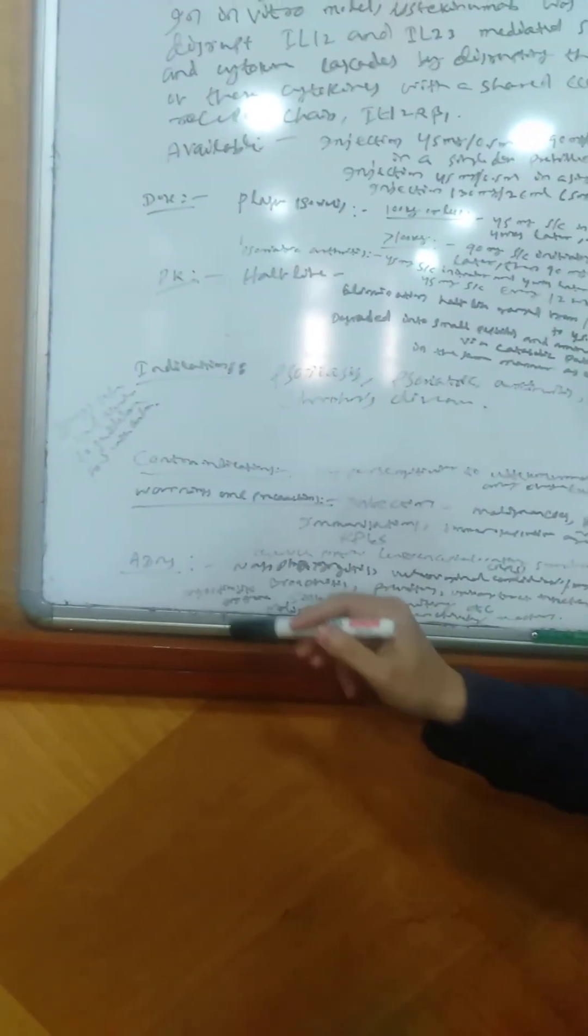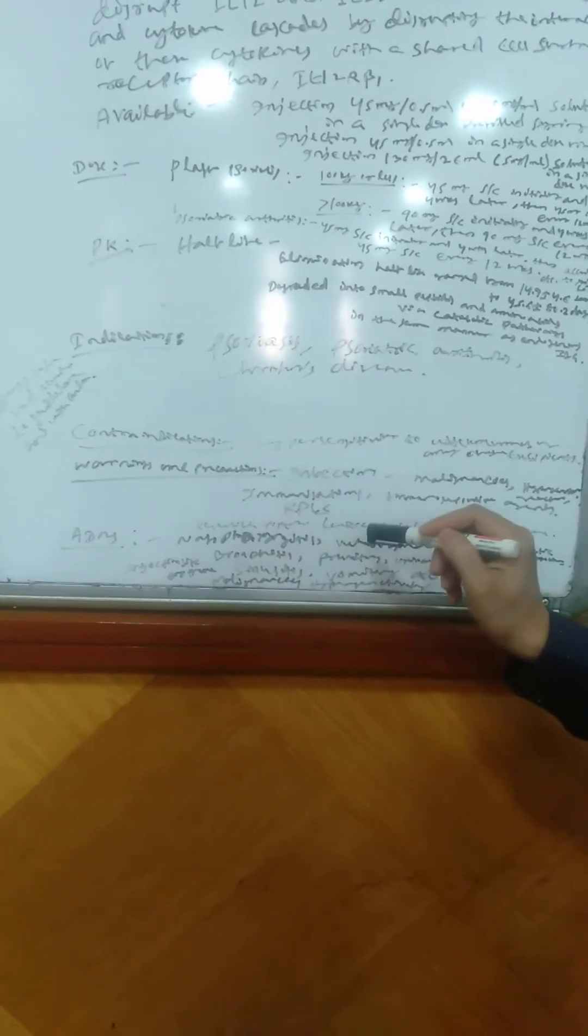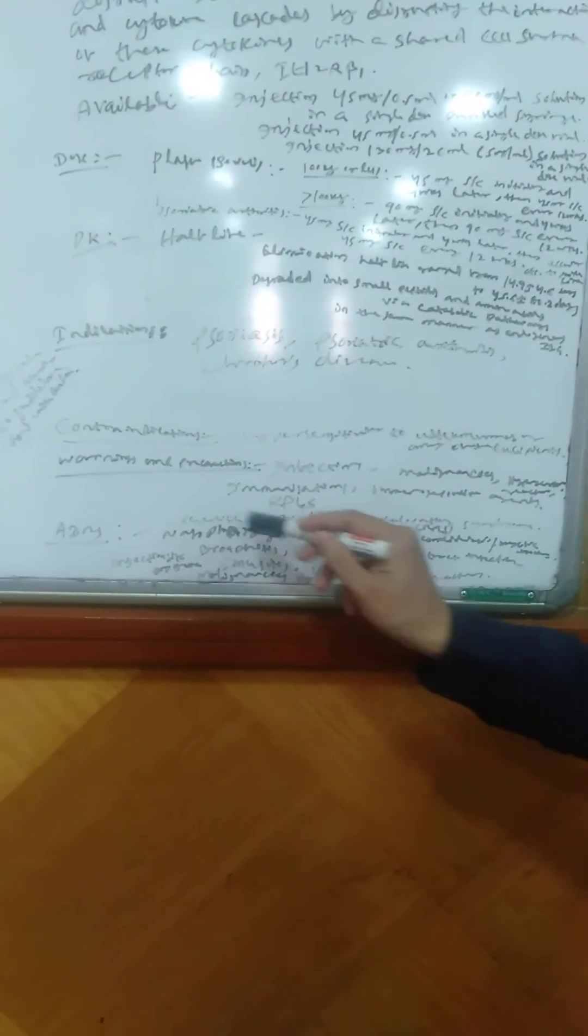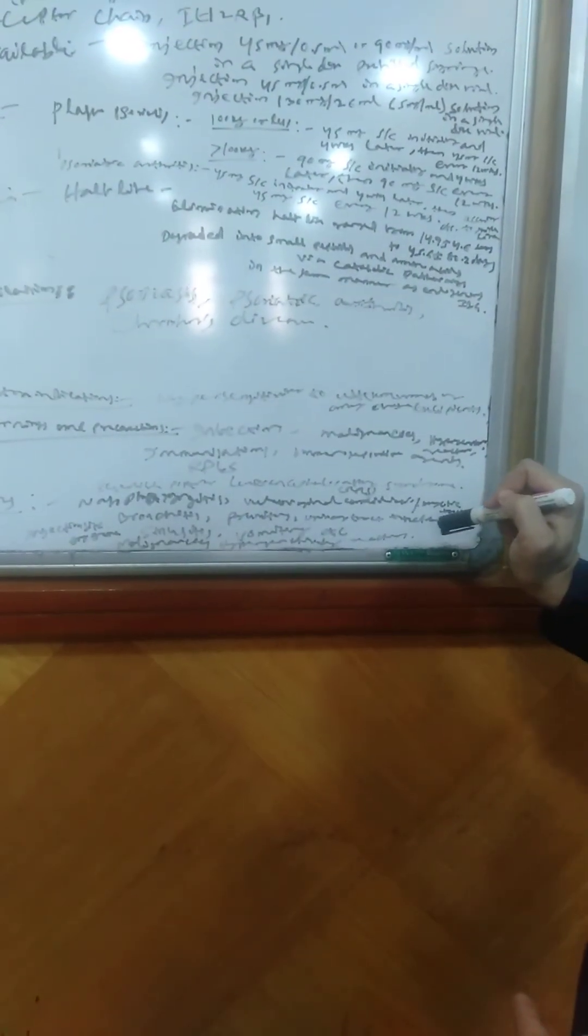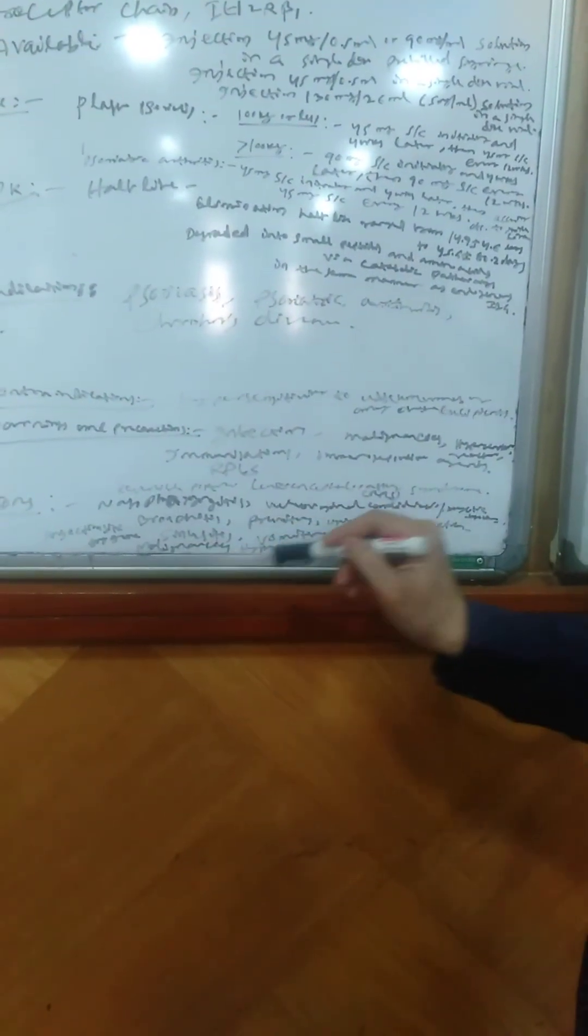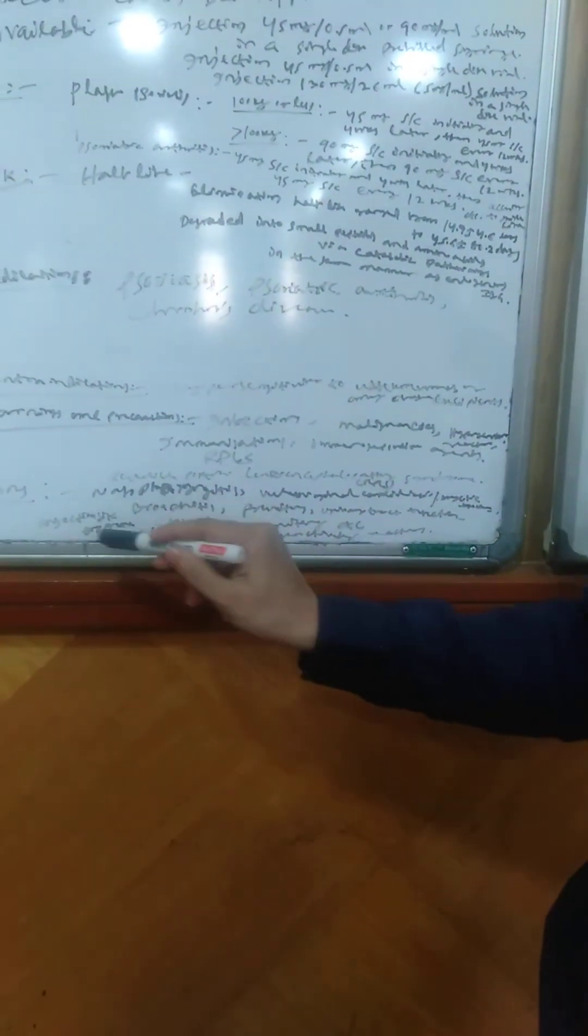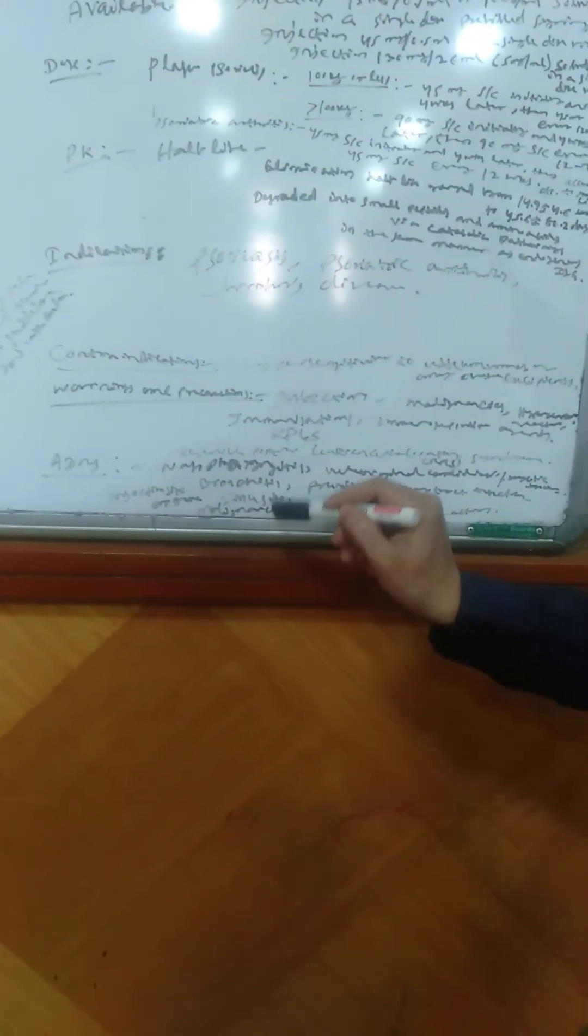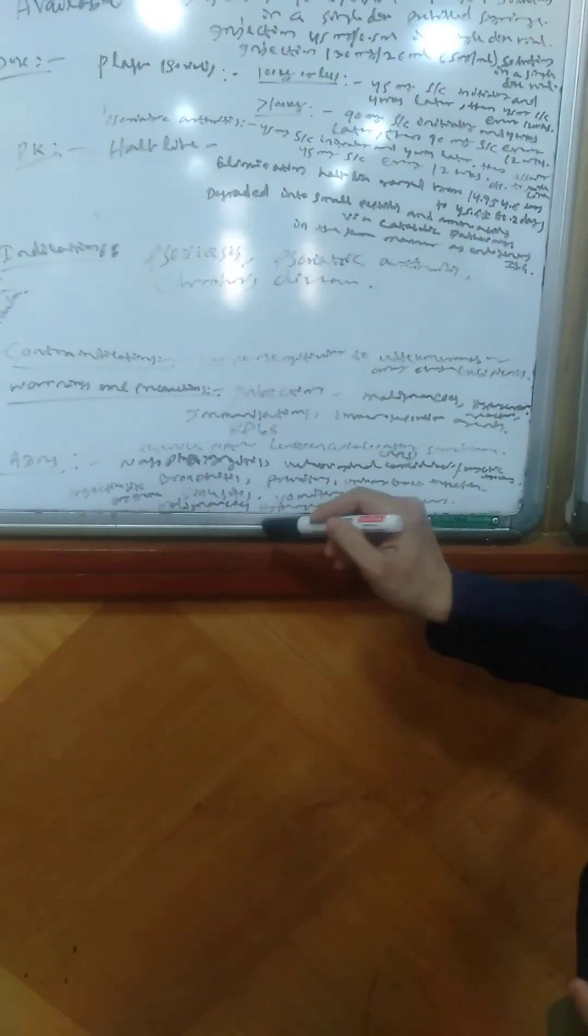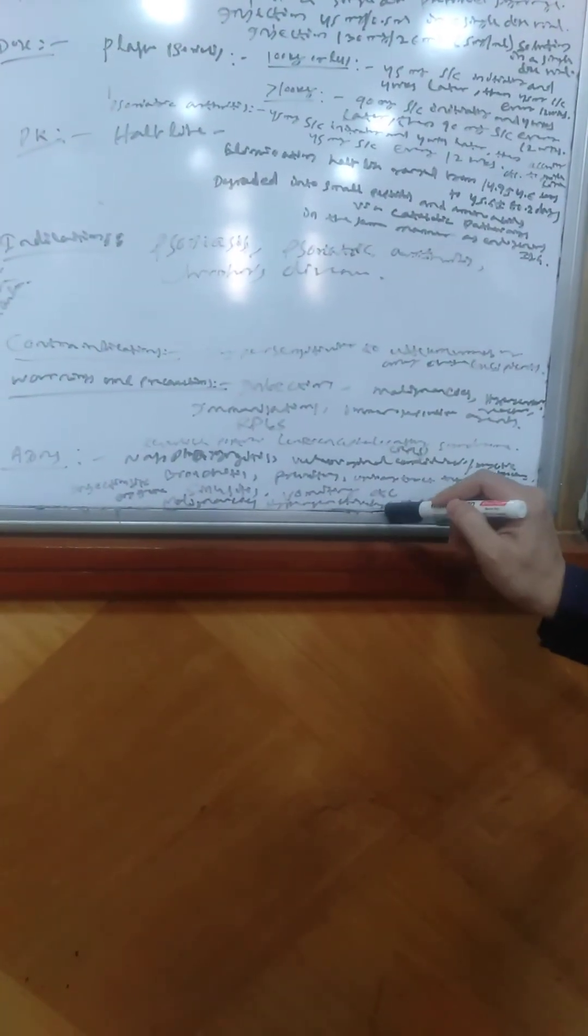Coming to the adverse reactions. The adverse reactions are reversible posterior leukoencephalopathy syndrome, nasopharyngitis, vulvovaginal candidal mycotic infection, bronchitis, pruritus, urinary tract infection, injection site erythema, sinusitis, malignancy and hypersensitivity reactions, vomiting, etc.